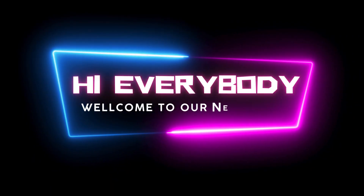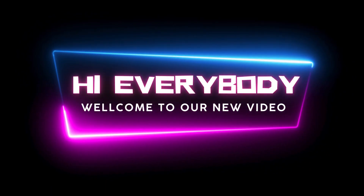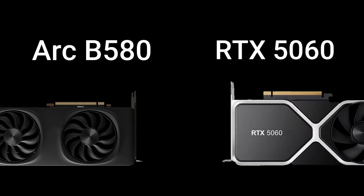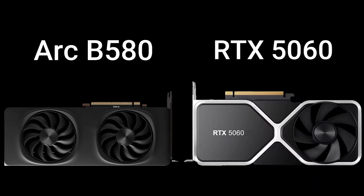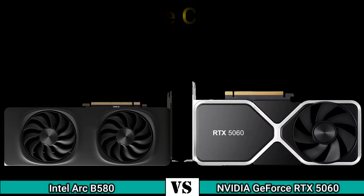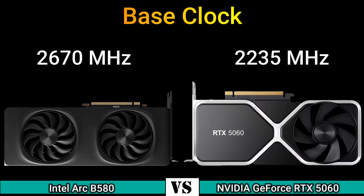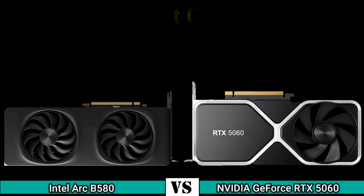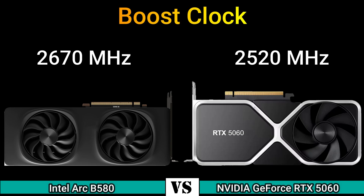Hi everybody, welcome to our new video. Today I will compare two GPUs in this video, so let's go. Firstly, we start with performance: base clock 2670 MHz and 2235 MHz, boost clock 2670 MHz and 2520 MHz.